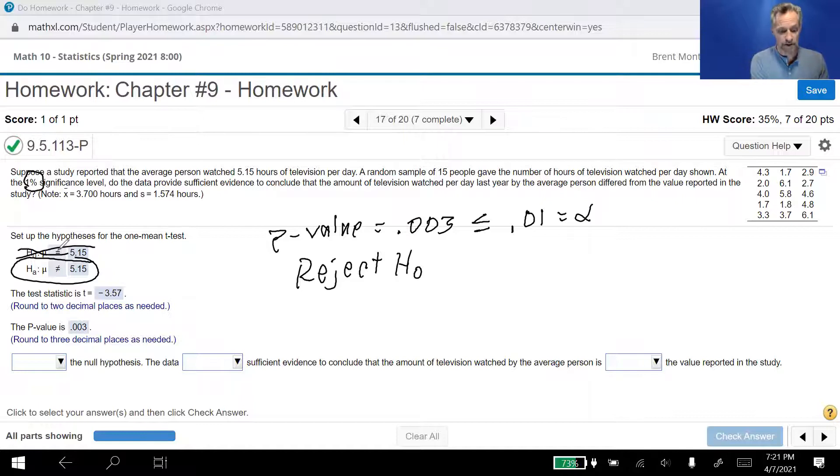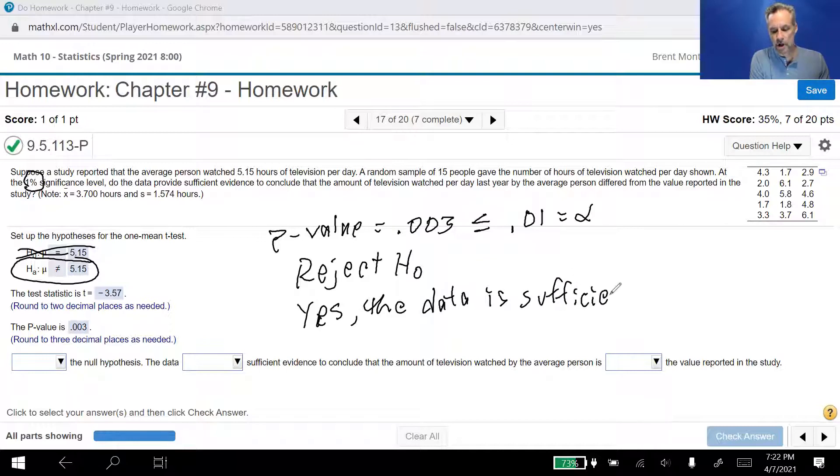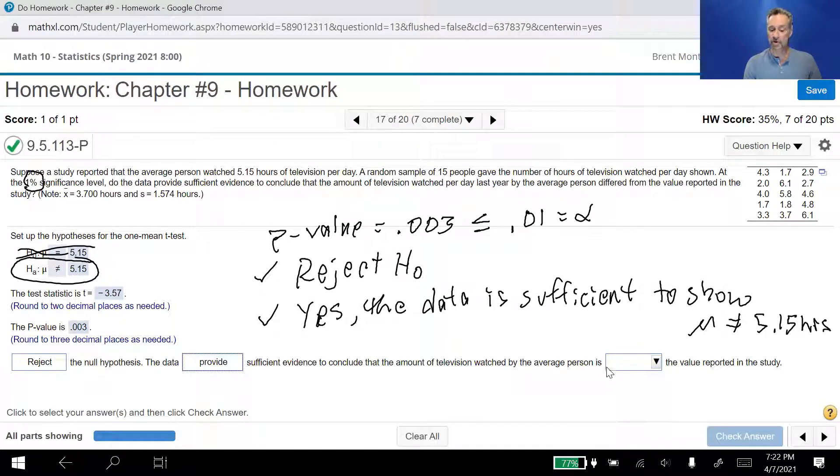And so then I state my conclusion in terms of the alternative hypothesis. The question was, does it look like the hours of TV watched per day differed from the year shown? And we say yes, the data is sufficient to show the alternative hypothesis, which in this case was that mu is not equal to 5.15 hours. So notice the conclusion is in terms of the null hypothesis. Rather, the decision whether or not to reject is in terms of the null hypothesis. The conclusion is in terms of the alternative hypothesis. And so now we can answer. So we say yes, we reject the null hypothesis because it was too unlikely to be true. However, the data do provide sufficient evidence to conclude that the amount of television watched by the average person differed or is different from the value reported in the study.